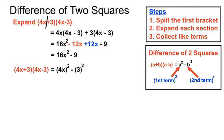Just leaving us with 16x squared minus 9. Now that doesn't seem like it's related to the first term or the second term. But remember when we square the first term, the first term is 4x times 4x so that's how we get 16x squared. It's 4x times itself. And then our second term is 3. So when we square that we get 16x squared minus 9.